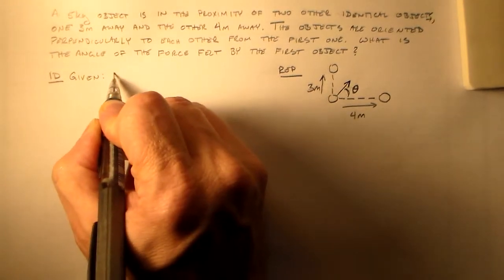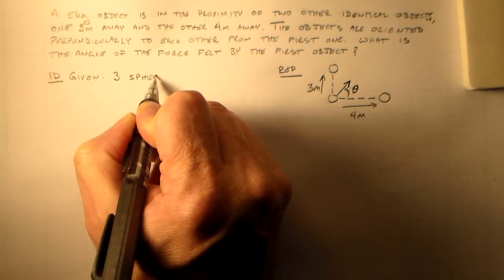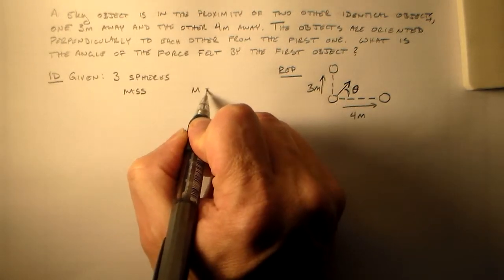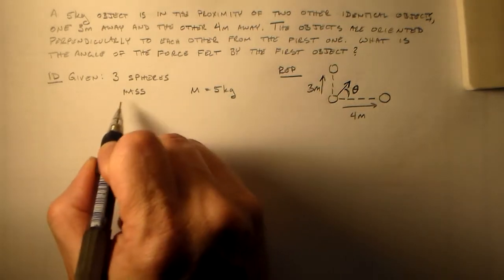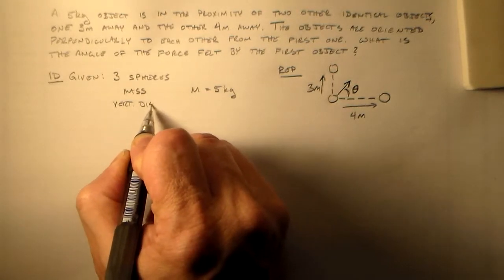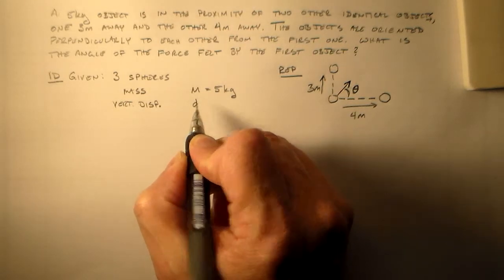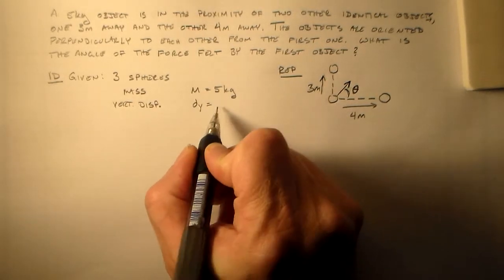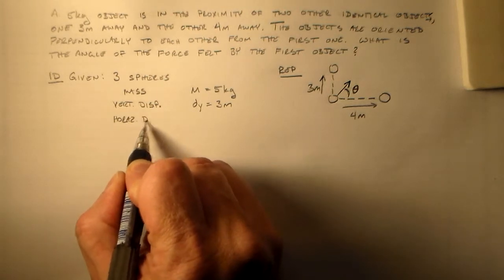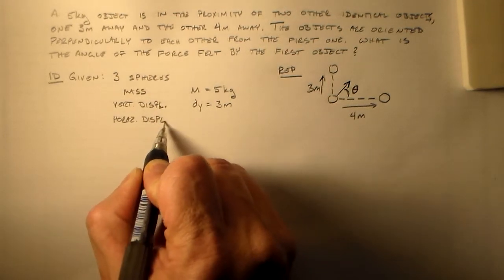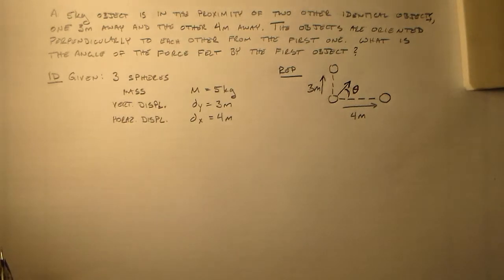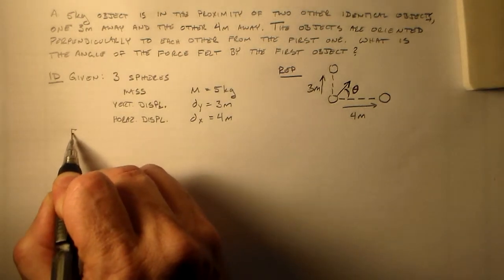So given three spheres, each of mass M equals five kilograms. All right. Let's see. Then we have our vertical displacement. I'm going to call that DY. How about that? That's three meters. And then I have my horizontal displacement, DX is equal to four meters. Nobody's ever figured out why horizontal becomes HORAS, but it has. So remember that.